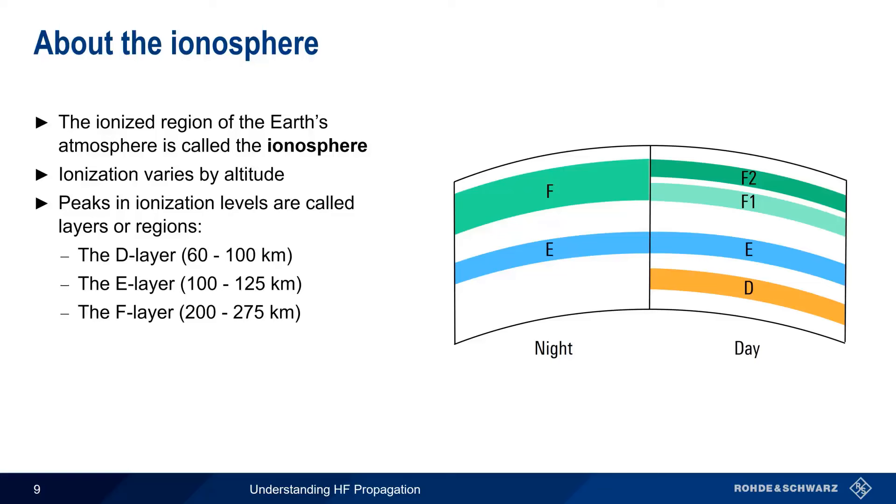The reason for defining these different layers is that each of these layers will refract and/or absorb HF signals in different ways.